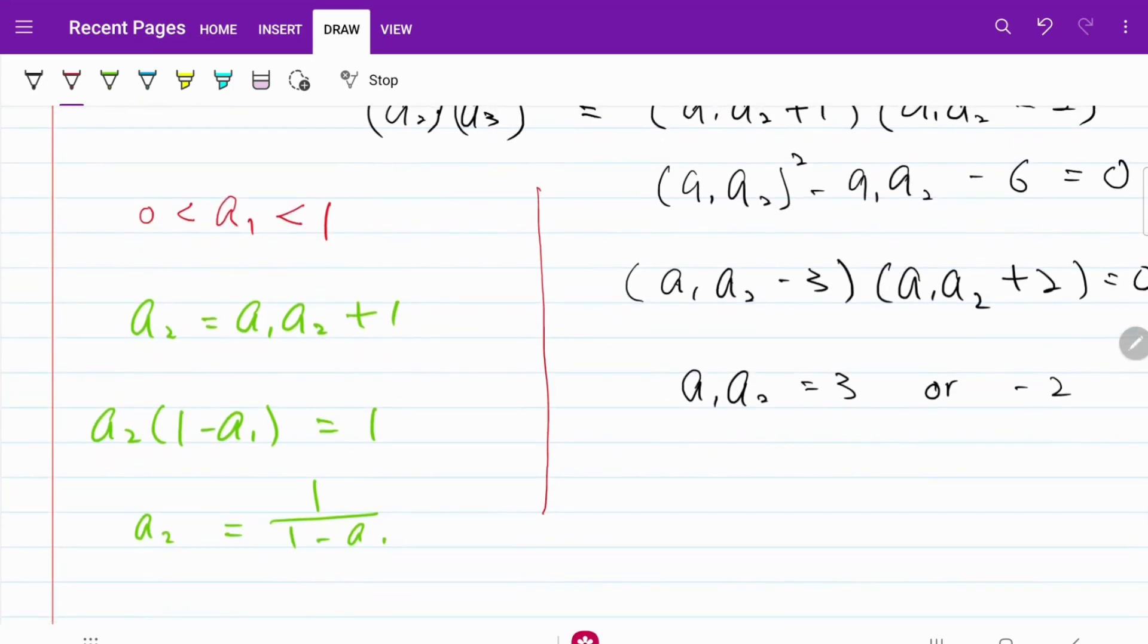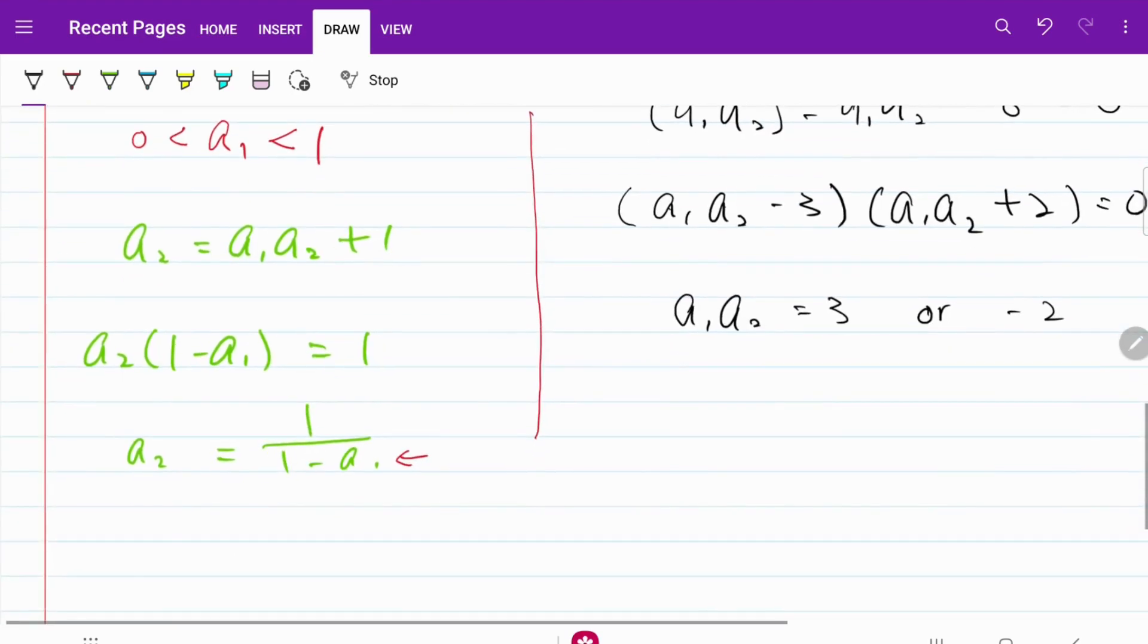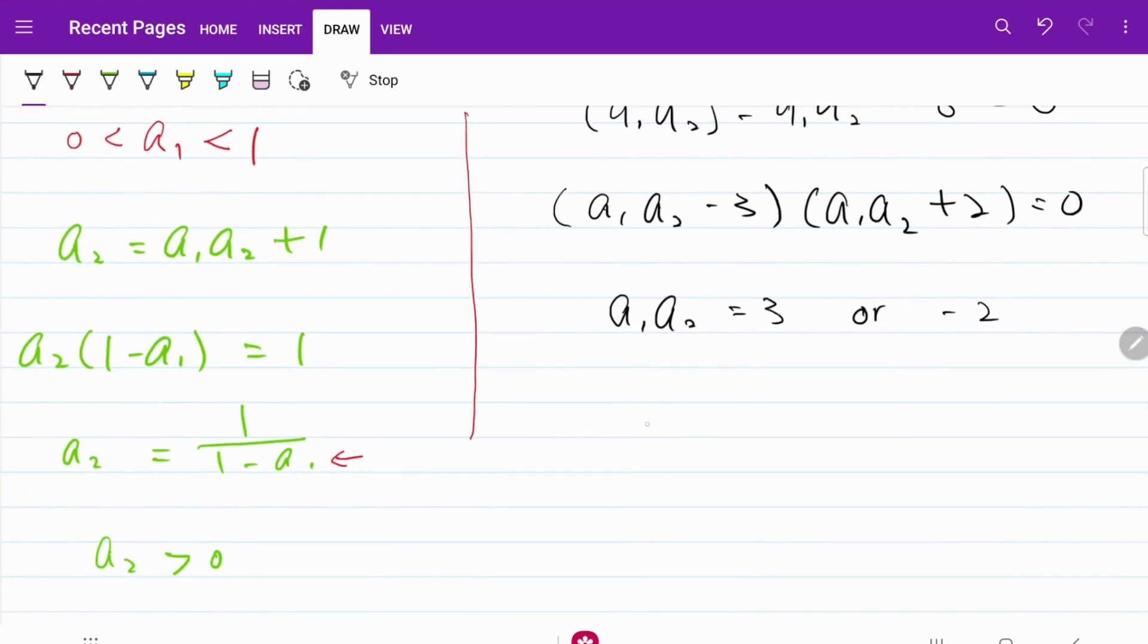Since A1 is a positive number between 0 and 1, I know that A2 must be bigger than 0 as well. So A2 is a positive number. With that, we know that A1·A2 is a product of two positive numbers, so itself must be positive. In other words, A1·A2 = 3 and negative 2 will be rejected.